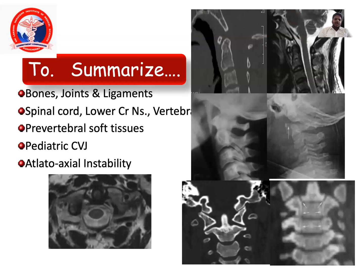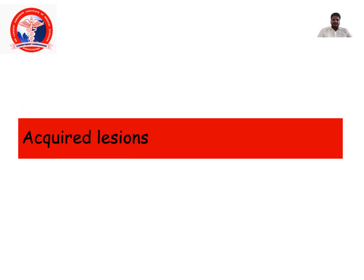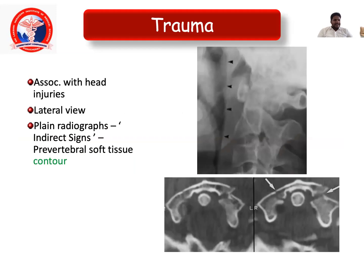To summarize, the key structures to assess are bones, joints, ligaments, spinal cord, lower cranial nerves, vertebral arteries, and muscles. Pre-vertebral soft tissues are essential to evaluate all these features. The cranial artery assessment is very important for instability, especially in basilar invagination, basilar impression, platybasia, Chiari malformations, achondroplasia, mucopolysaccharidosis, and Down syndrome. For acquired traumatic lesions, the lateral view and plain radiographs with indirect soft tissue signs are essential.